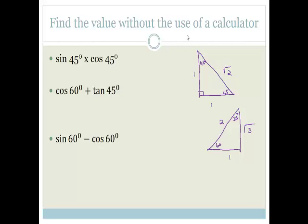Please go through it and remember SOHCAHTOA. So, sine 45 times cos 45: sine of 45 is opposite over hypotenuse. Using the bottom 45-degree angle, the opposite is 1 and the hypotenuse is root 2. So we've got 1 over root 2, times cos of 45, which is adjacent over hypotenuse, which is also 1 over root 2. One times 1 is 1, over root 2 times root 2 is 2.